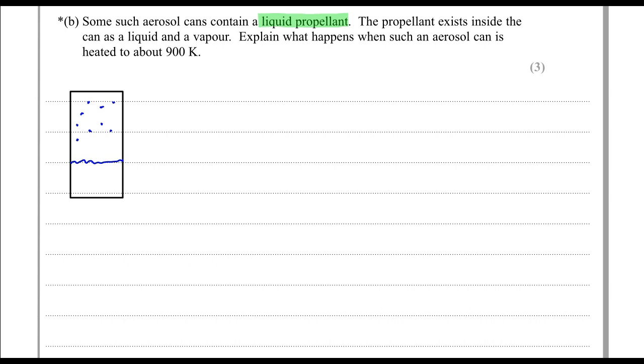When the can is heated, the particles inside gain kinetic energy. So the liquid particles will start to move faster, and the ones which are energetic enough near the surface will evaporate to become gas particles.